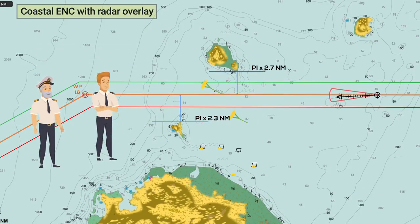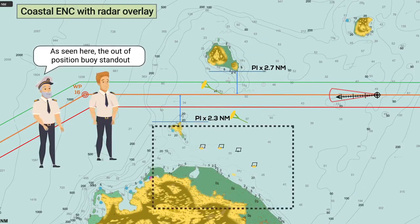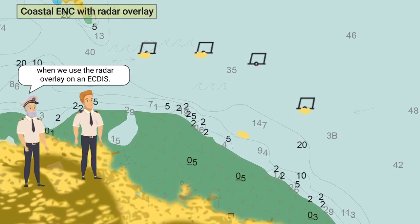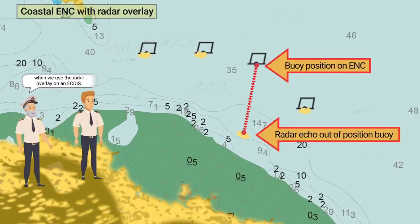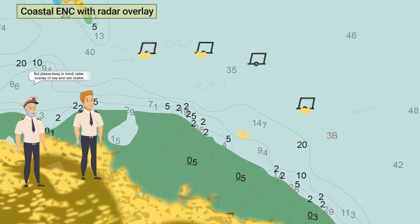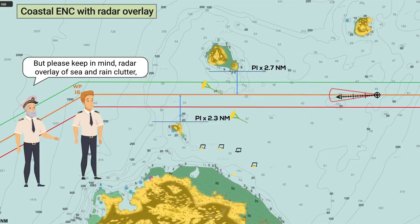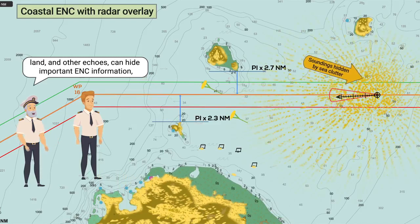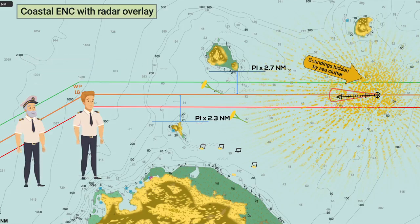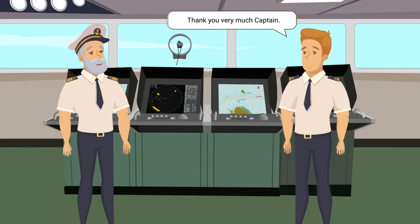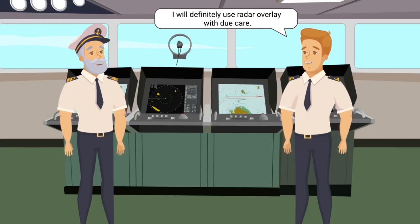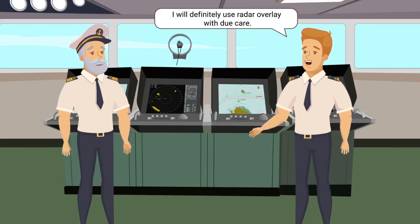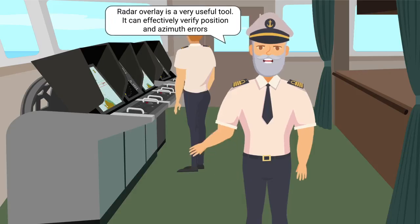Thank you, sir. Furthermore, we can easily detect abnormalities such as out-of-position buoys, as seen here. The out-of-position buoys stand out when we use the radar overlay on an ECDIS. However, radar overlay of sea and rain clutter, land, and other echoes can hide important ENC information, so please use radar overlay carefully. Yes sir, thank you very much, Captain. I will definitely use radar overlay with due care.